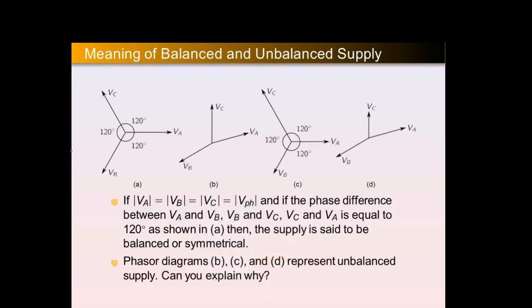What is meant by balanced supply? If three phases A, B, and C have the same magnitude — Va, Vb, and Vc are equal — and they are phase-displaced by 120 degrees apart from each other, then the angle between Va and Vb is 120°, Vb and Vc is 120°, and Vc and Va is also 120°. This system is called a balanced or symmetrical system.